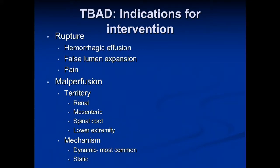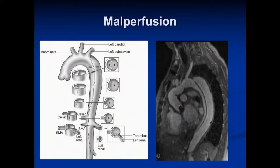The indications for intervention are complications such as rupture or impending rupture, which would be noted by hemorrhagic effusion, rapid false lumen expansion, or ongoing pain, or malperfusion in the renal, mesenteric, lower extremity, or spinal cord. These malperfusions can either be by a dynamic means or a static means.